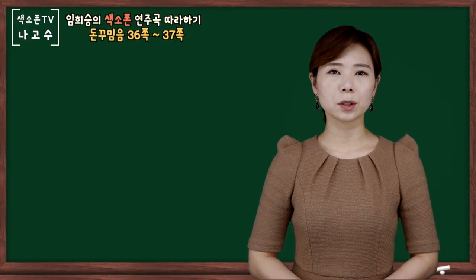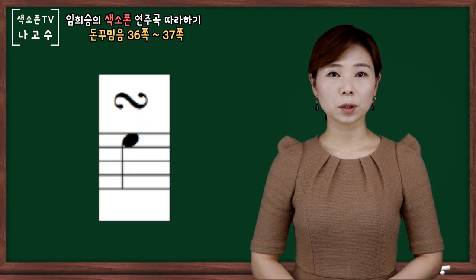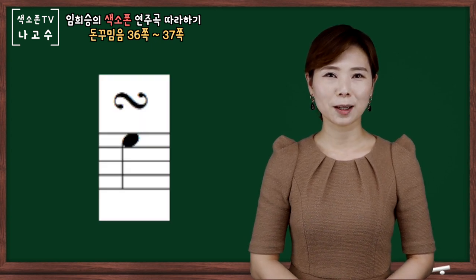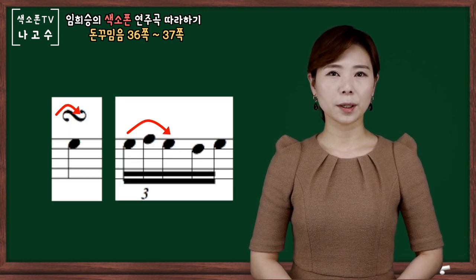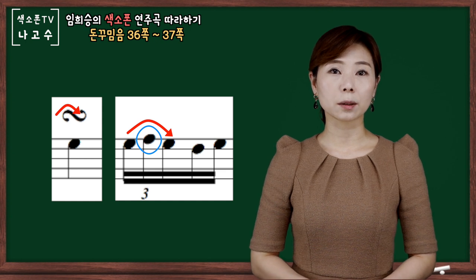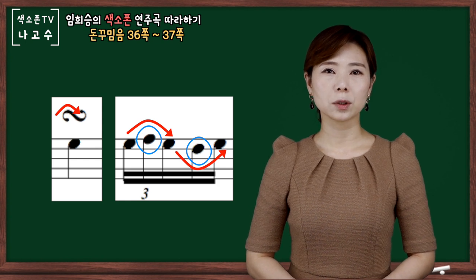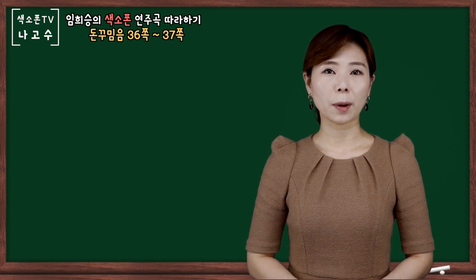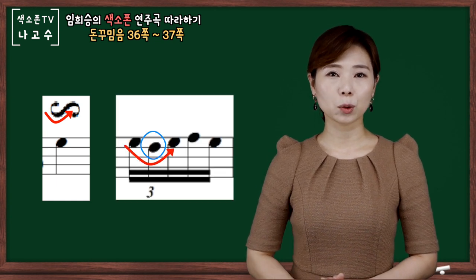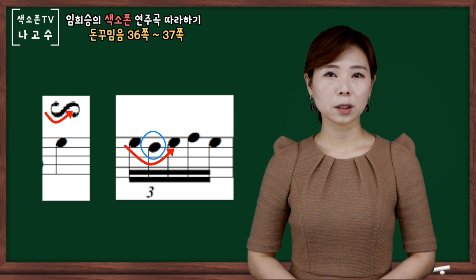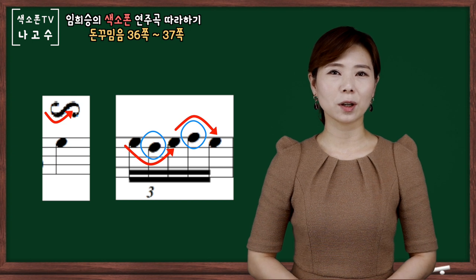돈 꾸밈음의 표기와 종류를 살펴보면 음 위에 S자를 눕혀놓은 듯한 모양이 돈 꾸밈음이 되겠습니다. S자의 모양이 위에 방향으로 먼저 그려진다면 원음에서 2도 위에 음으로 올라갔다가 원음을 거쳐 아래음 그리고 다시 원음으로 돌아오는 형태이고, S자의 모양이 반대로 아래 방향으로 먼저 그려진다면 원음에서 2도 아래음으로 내려갔다가 원음 그리고 위음으로 갔다가 다시 원음으로 돌아오는 형태가 되겠습니다.